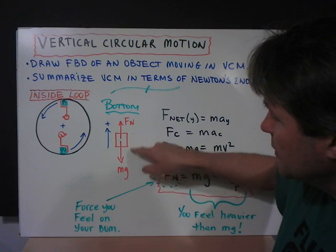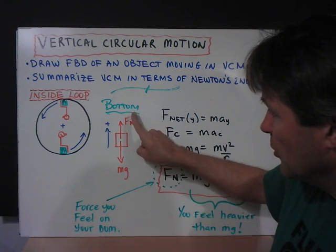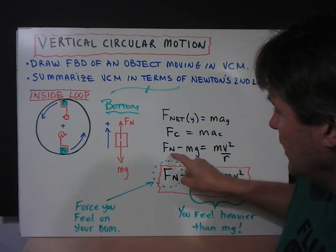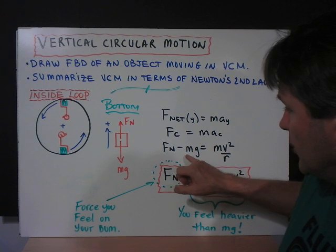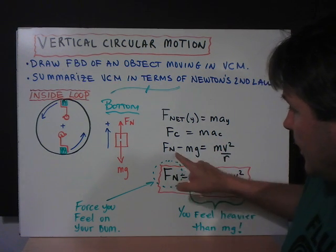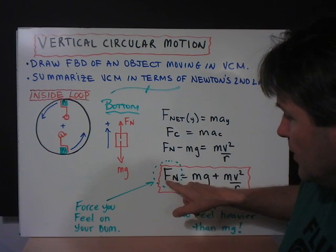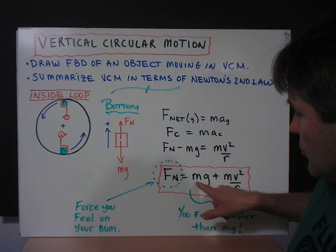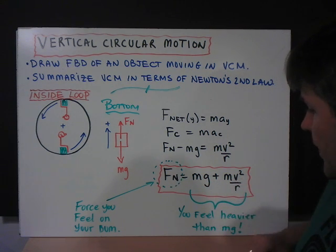There are two forces acting in the y direction. We have the normal force, which is positive, minus the weight of the person in the negative direction. And that's equal to mv squared divided by r. If we rearrange this formula in terms of Fn, Fn is equal to the person's weight plus mv squared divided by r.